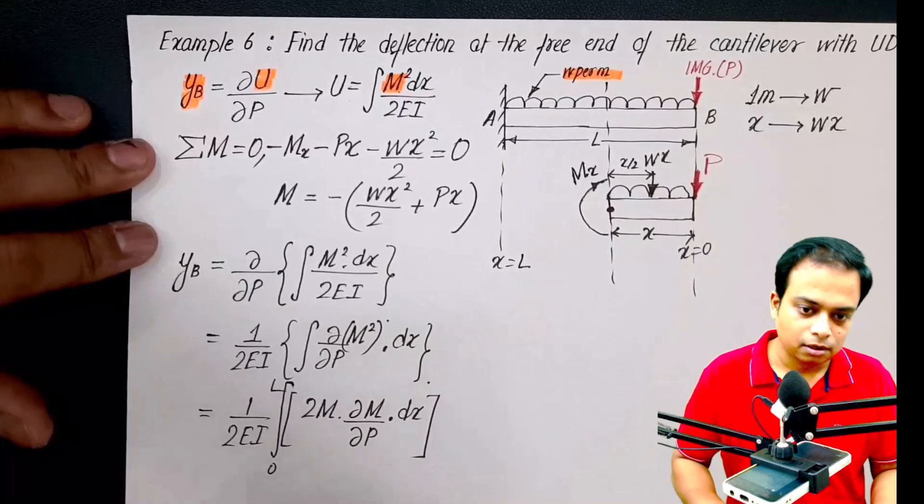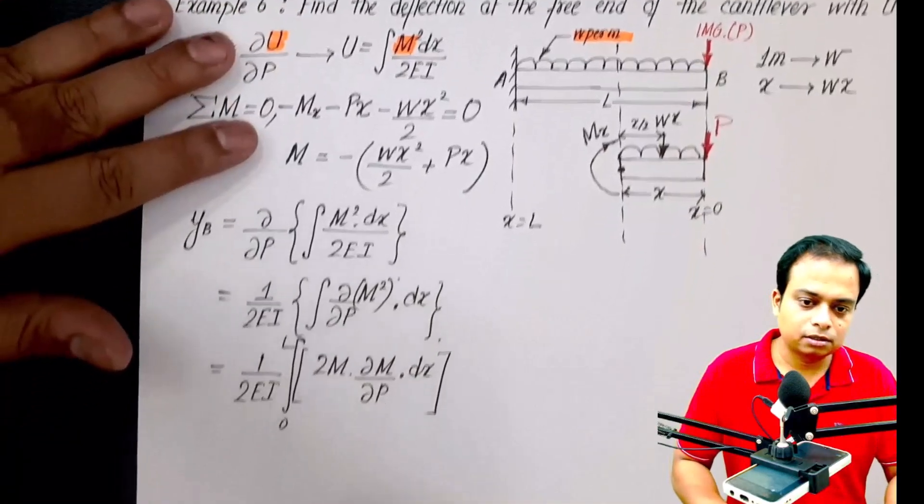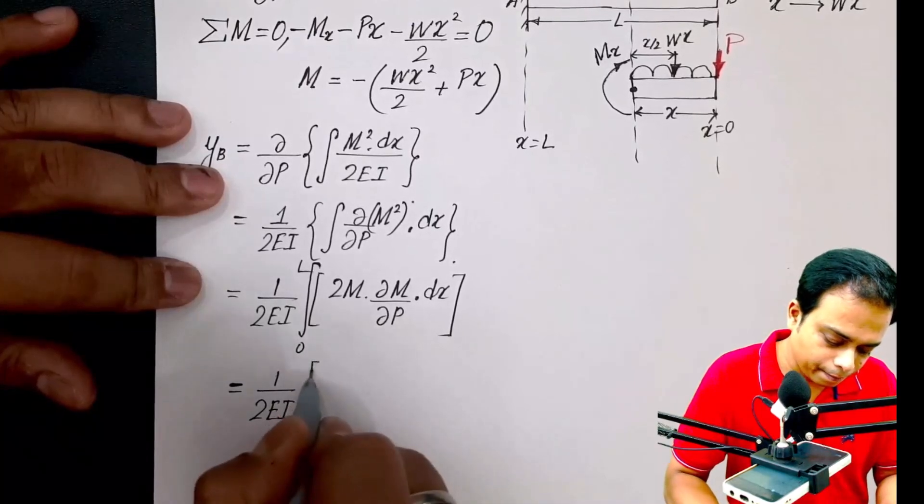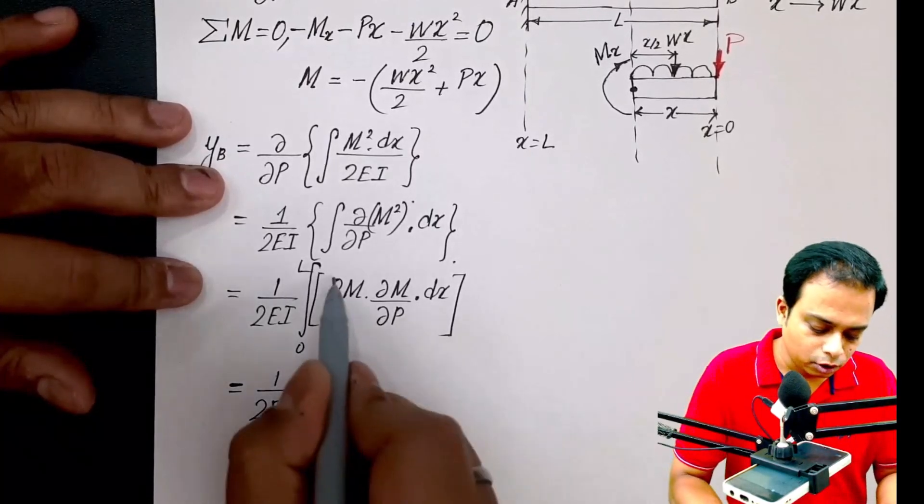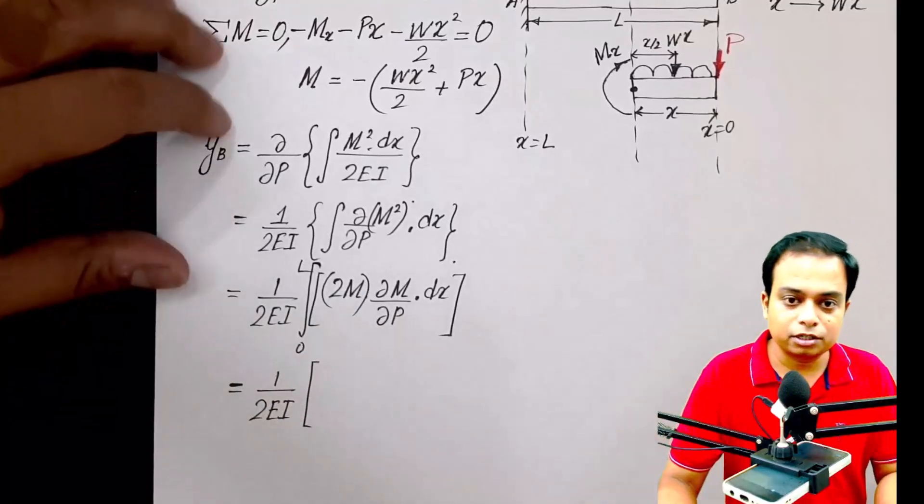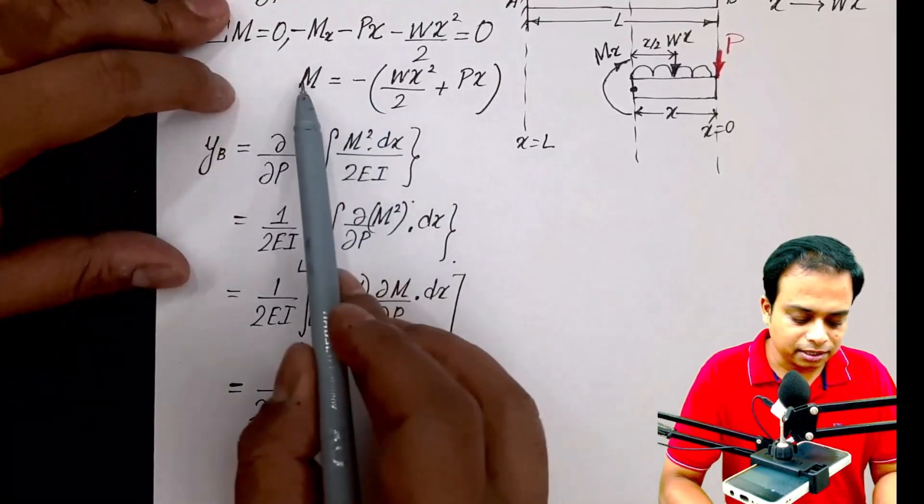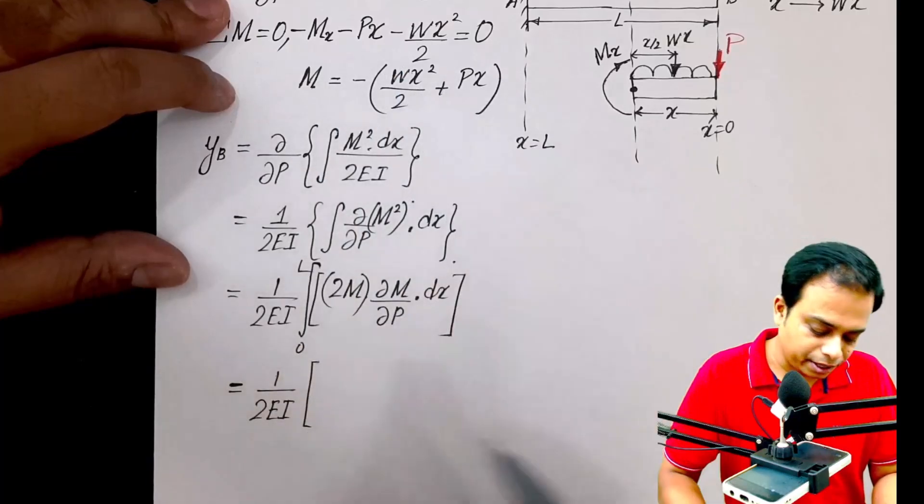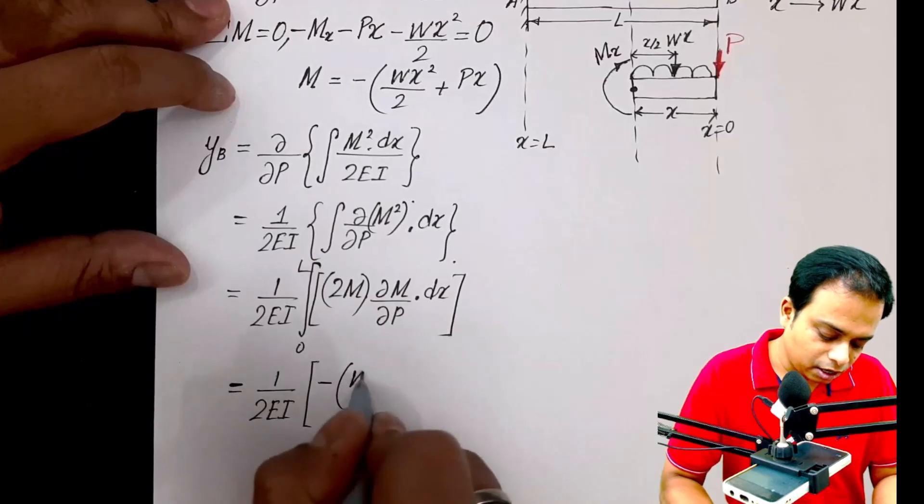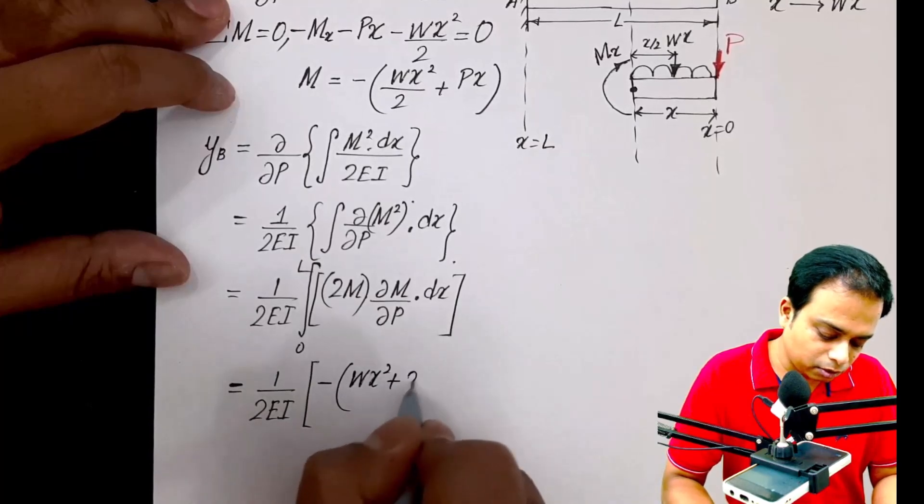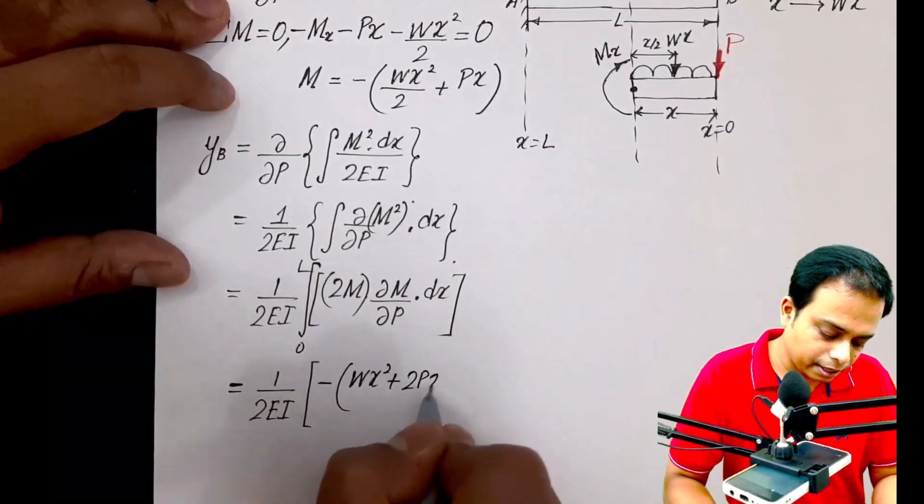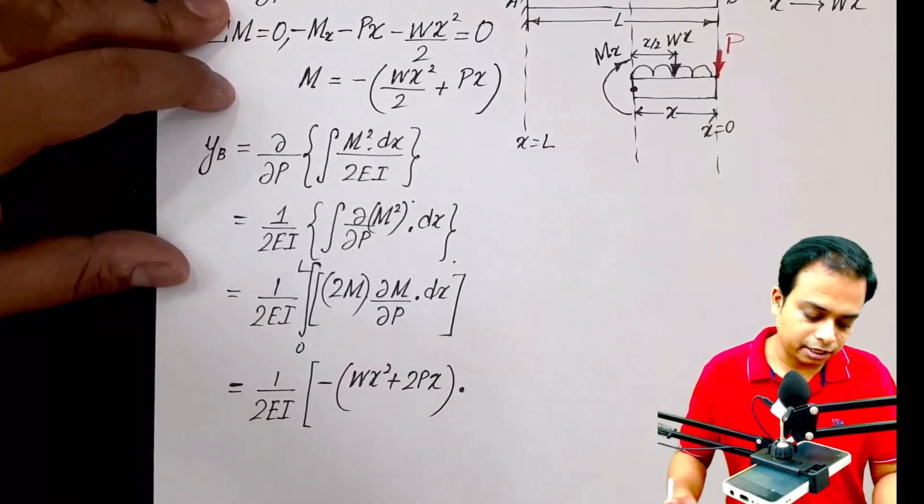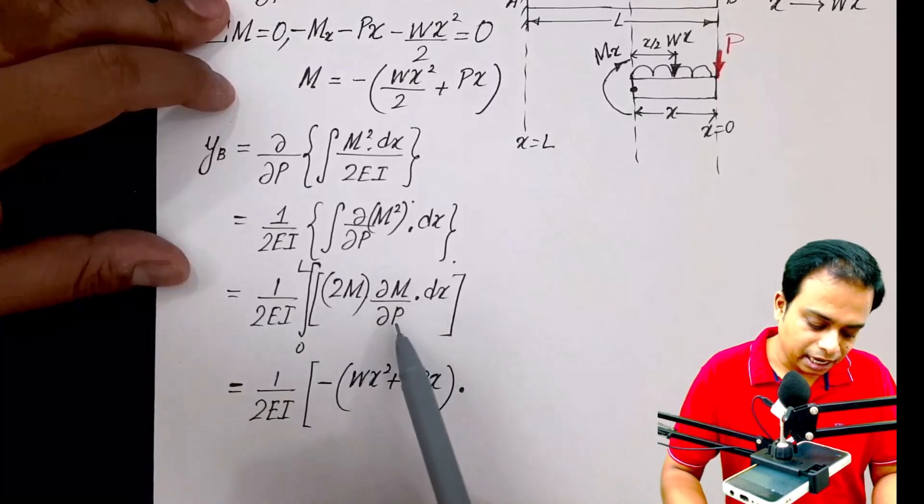One over 2EI inside, what do we have? 2m. Take a look at this: how much is 2m? Multiply this m with 2. Negative of wx square plus 2px, so that is what we have: minus of wx square plus 2px.